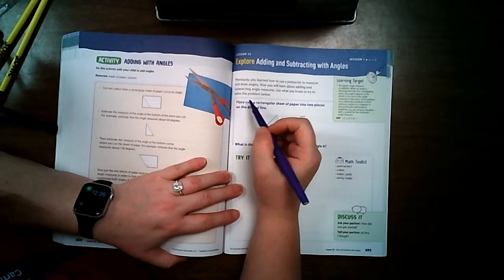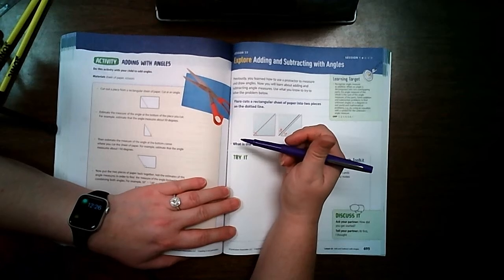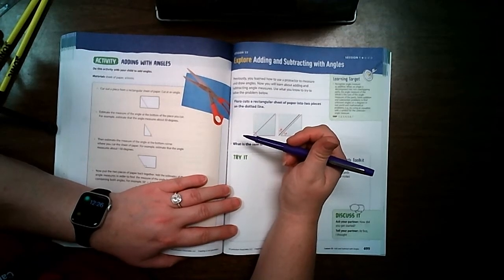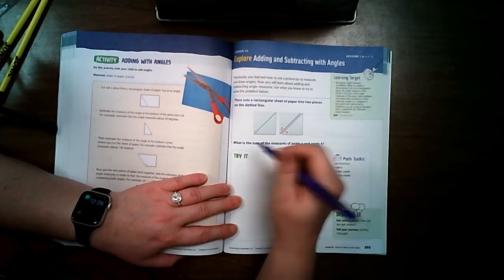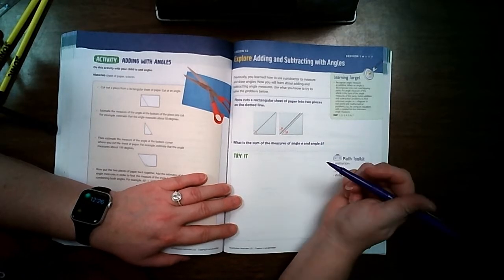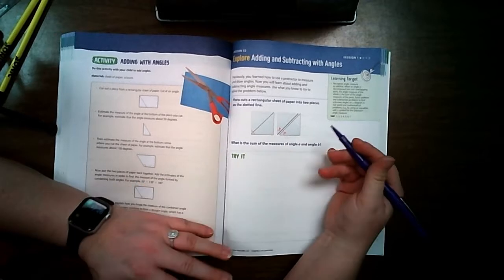Last week we learned how to use a protractor to measure angles and also how to draw angles. And this week we're going to learn about how when you add angles together or subtract an angle from a different angle, how you can get the results.